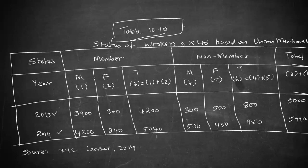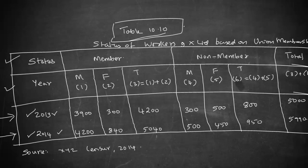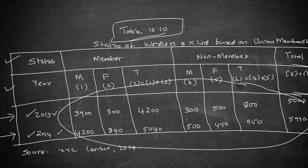Then you have what is known as the box head. These rows contain items like status, member, non-member, total, and year — all of these are called box heads because they guide the columns in the table. On the left side you have information relating to 2013 and 2014 — these items defining the rows are called the stub. The information provided in the body of the table conveys the data that is required.